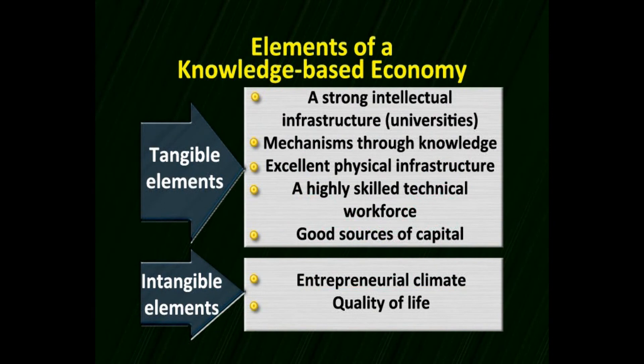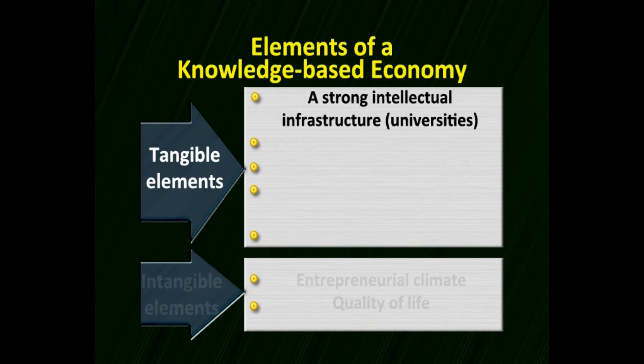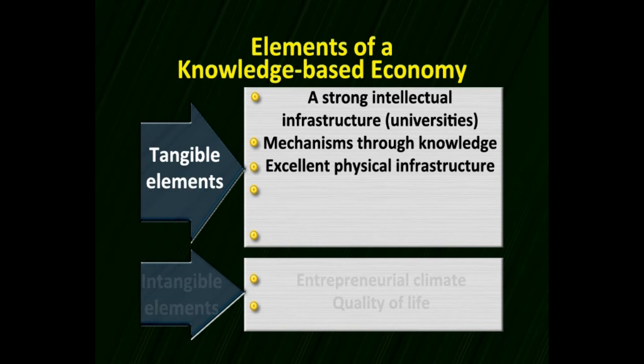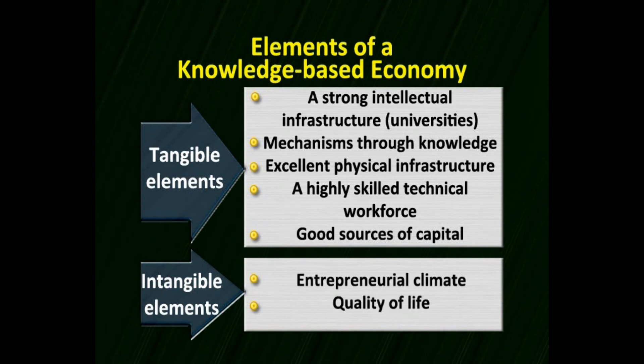The knowledge-based economy has tangible and intangible elements. Tangible elements include intellectual infrastructure such as universities, mechanisms for knowledge creation, excellent physical infrastructure, a highly technically supported workforce, and good sources of capital. Intangible elements relate to entrepreneurial climate and quality of life. The interaction and expertise of a particular industry develops and sustains society. More diversification and change come when people are upgraded and talented.